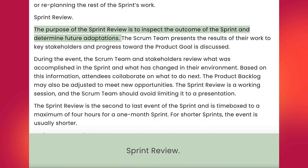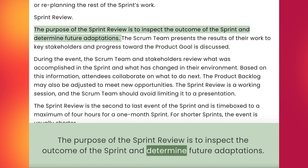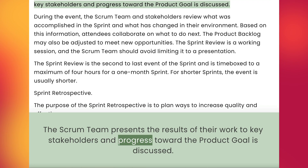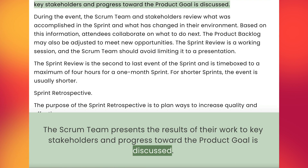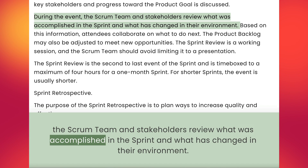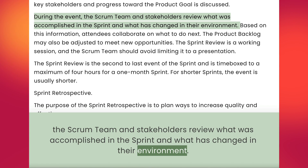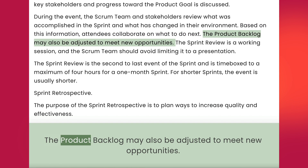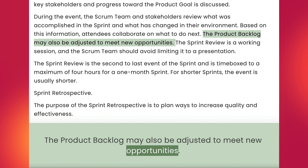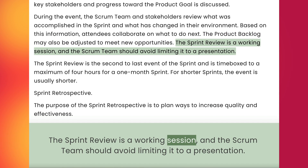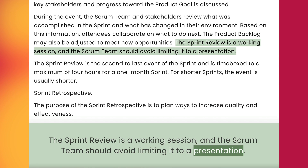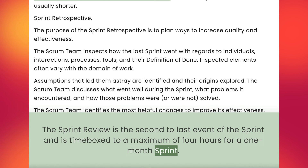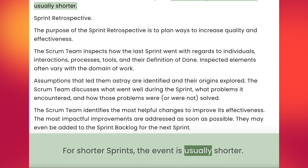Sprint Review. The purpose of the sprint review is to inspect the outcome of the sprint and determine future adaptations. The Scrum team presents the results of their work to key stakeholders and progress toward the product goal is discussed. During the event, the Scrum team and stakeholders review what was accomplished in the sprint and what has changed in their environment. Based on this information, attendees collaborate on what to do next. The product backlog may also be adjusted to meet new opportunities. The sprint review is a working session and the Scrum team should avoid limiting it to a presentation. It is time-boxed to a maximum of four hours for a one-month sprint. For shorter sprints, the event is usually shorter.